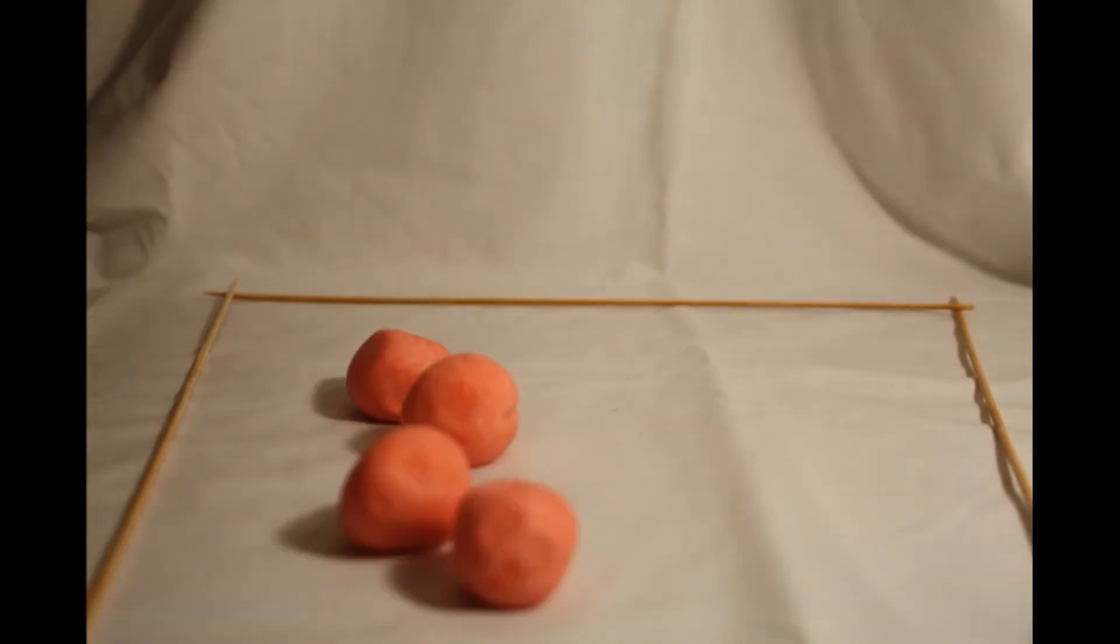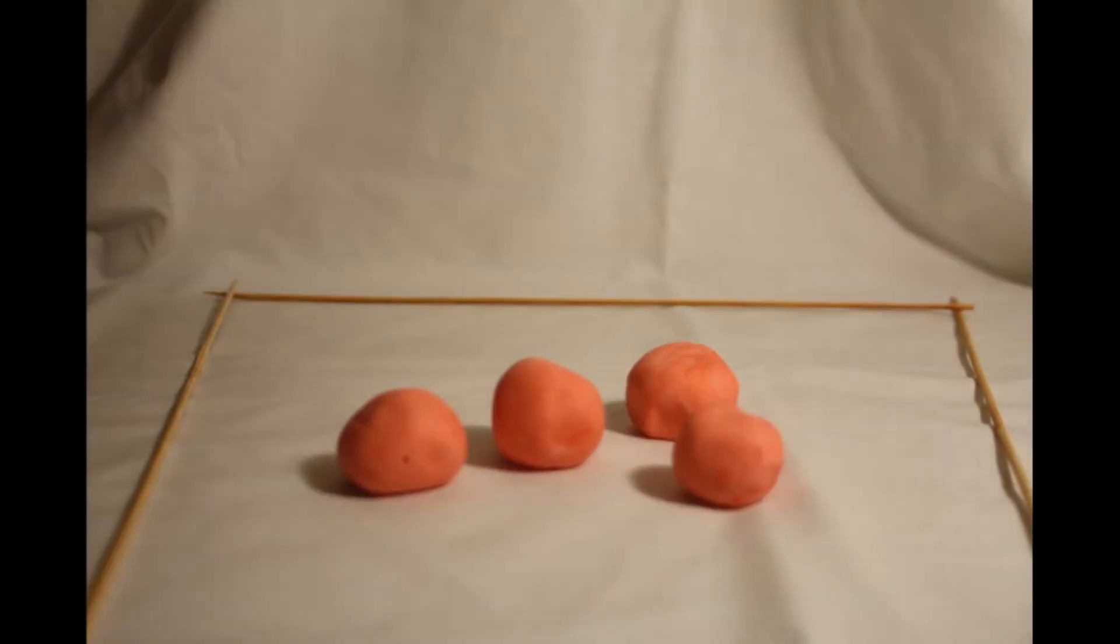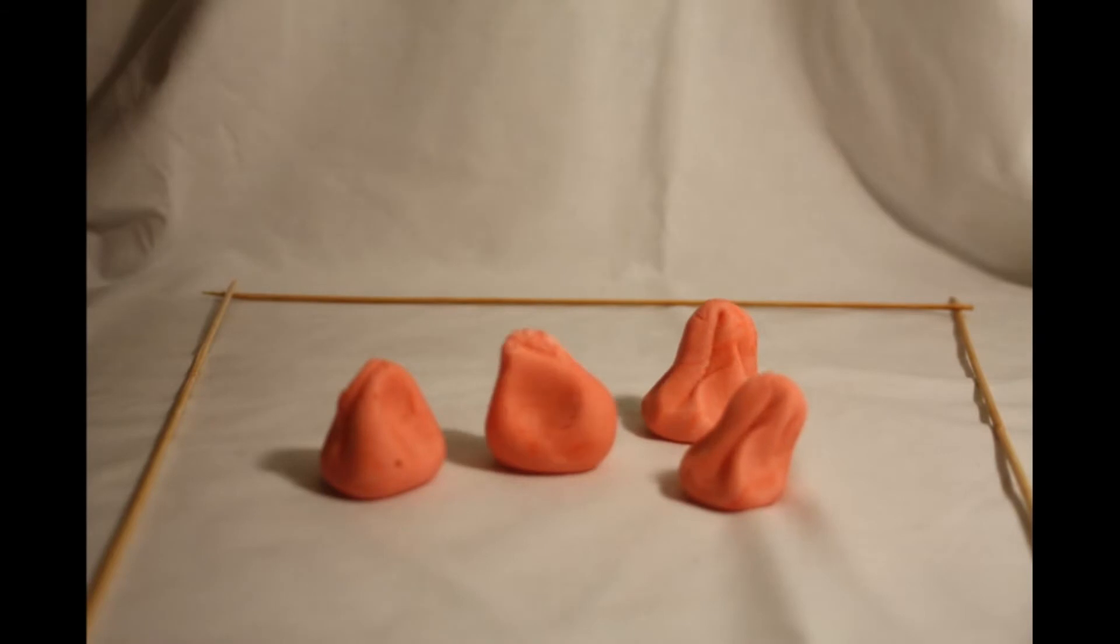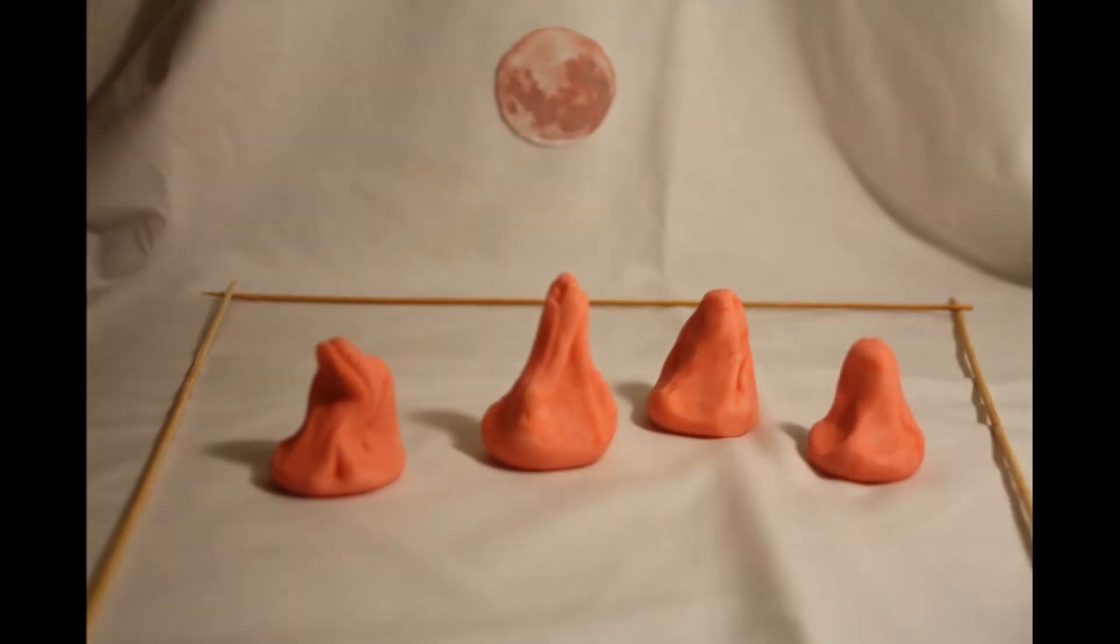Once upon a time, four round aliens from the Pink Planet Clan were stranded on Earth. They wanted to get back to Clown, but no matter how many times they tried to fly back home, they failed.